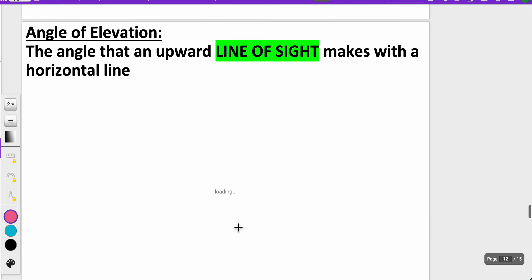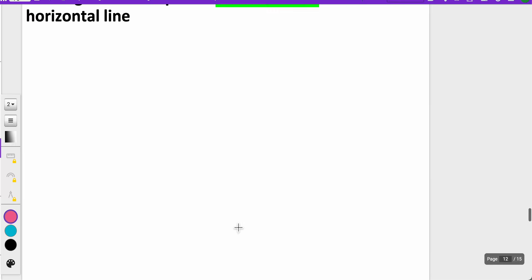Last little bit of our notes is called angle of elevation. Still going to use tangent information here, except take it one step further. The angle that an upward line of sight makes with the horizontal line is called an angle of elevation. This is going to come into play whenever we're trying to find the length of something.